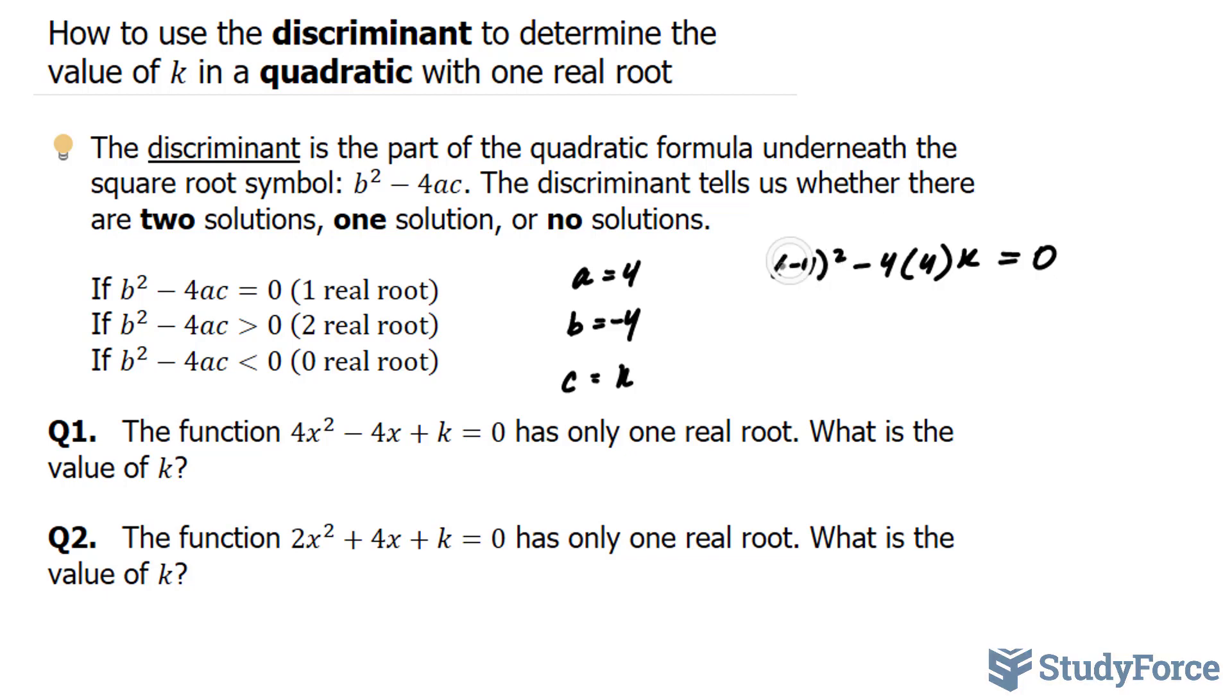So we simplify everything on the left side. (-4)² is 16, and -4 times 4 is -16. Bringing 16 over to the left side, we have -16k = -16.